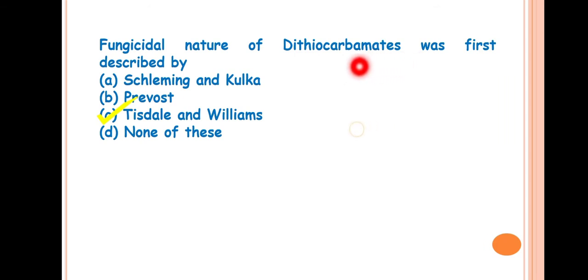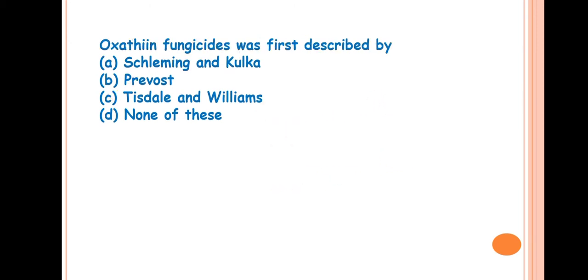Next, oxathiin fungicide was first described by? Answer is A, Schlaiming and Kulka. Schlaiming and Kulka were the first scientists who discovered the systemic fungicide. This oxathiin group was the first systemic fungicide discovered by Schlaiming and Kulka.